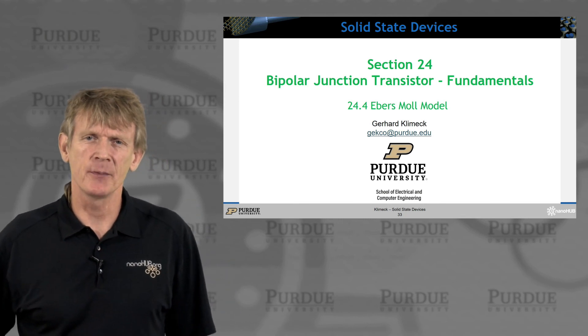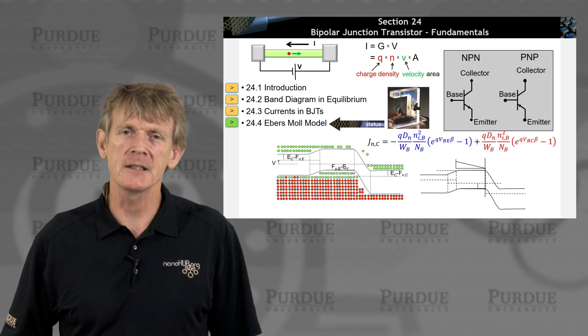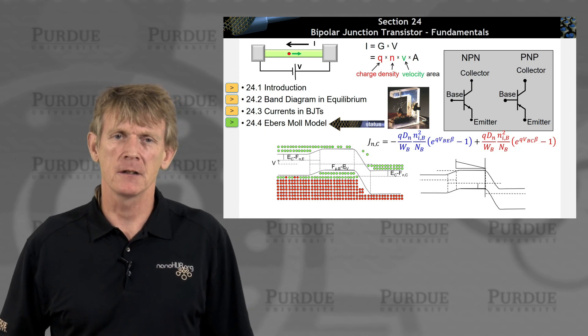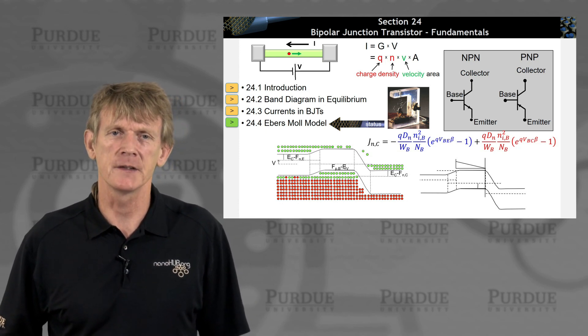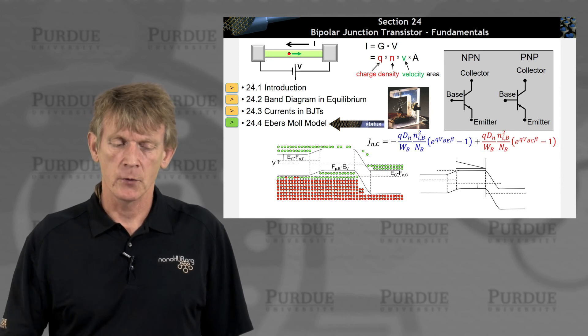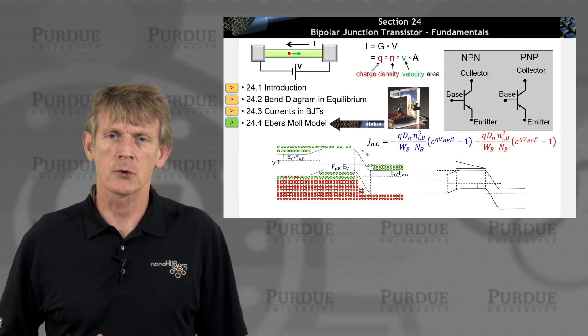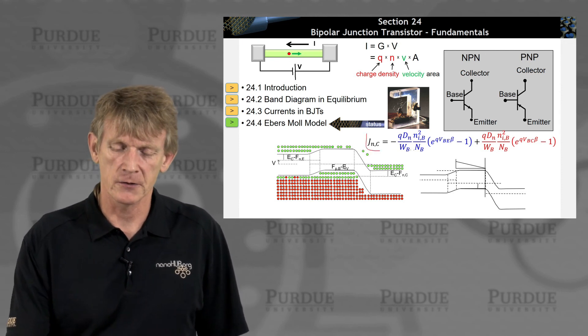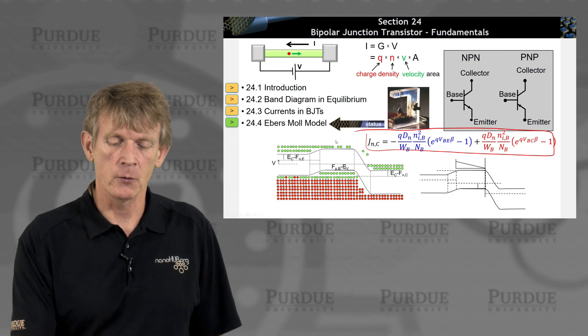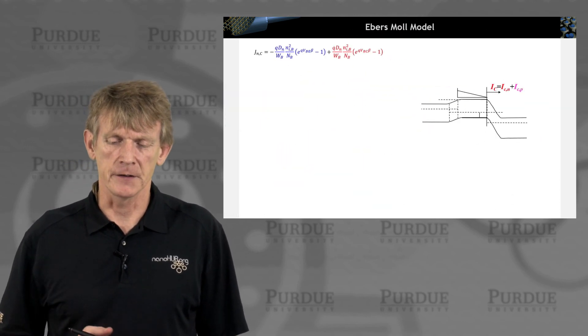Okay, so let's talk about the Ebers-Mull model, which provides a more complete description of the I-V characteristics of a transistor. So here we are. We went through some introduction, we plotted the band diagrams, we derived some current expressions. The current expressions were pretty straightforward. Let's do a little bit more work around the edges of this.